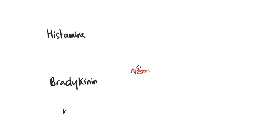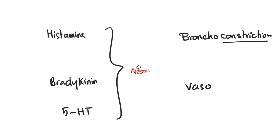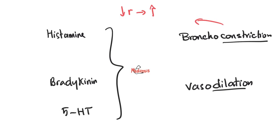Histamine, bradykinin, and serotonin have two things in common: these mediators tend to cause bronchoconstriction — so the bronchi constrict and you wheeze. But these same three mediators do the opposite in blood vessels — they are vasodilators for the most part. When I cause bronchoconstriction, what happens to the radius of the bronchus? It decreases. When radius decreases, resistance increases. Why? It's Poiseuille's law.